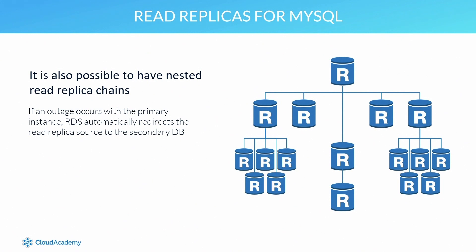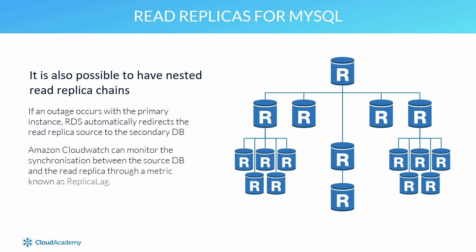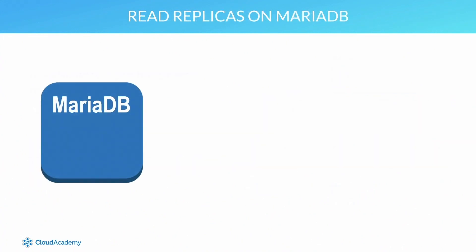From an operational perspective, it's important to understand how your read replicas are performing and if they are maintaining a high level of synchronization with their source database. Using Amazon CloudWatch, you can monitor this through a metric called Amazon RDS Replica Lag. This value shows you how many seconds the read replica is behind the source database — you want this value to be as close to zero as possible.